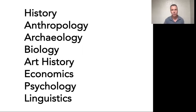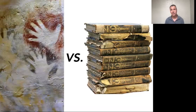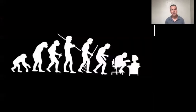In this course we'll pose questions like: when does history begin? And is there a difference between prehistory and history? Does human history have a trajectory? And if so, is it direct and linear? Or is it discontinuous, zigzagging down to the present day?